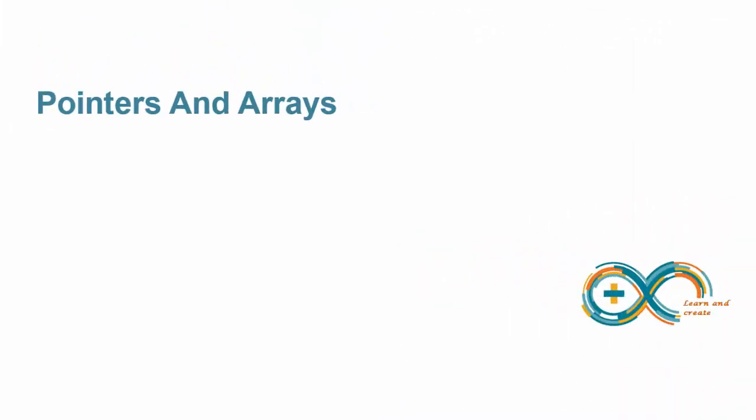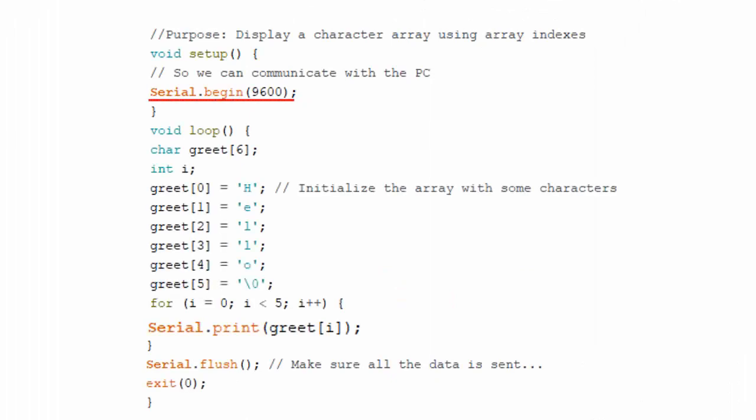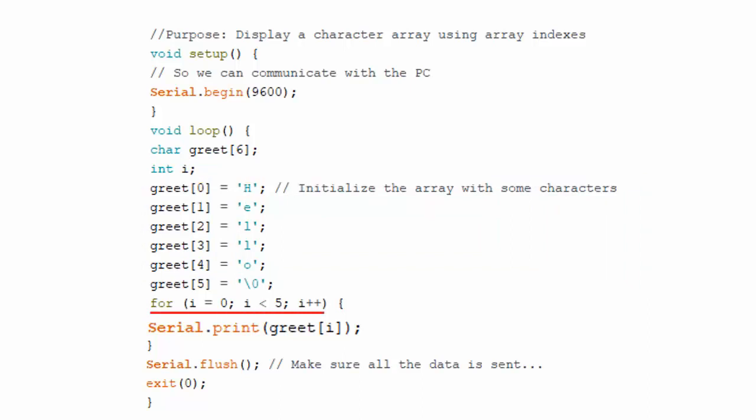To understand the relation between pointers and arrays, we will see a program which simply displays the content of a character array. This is the code. This part configures the serial monitor. This is an array of 6 characters. Here an integer i is defined. This part initializes the array with some characters.